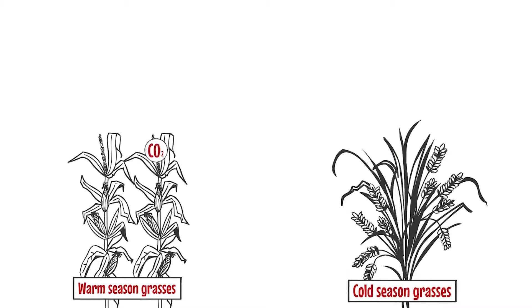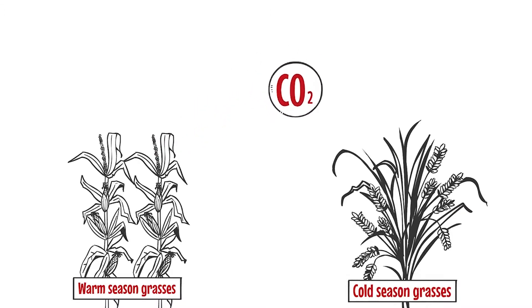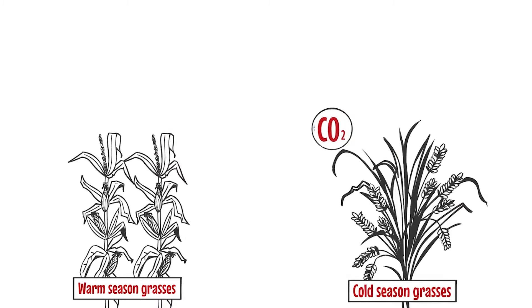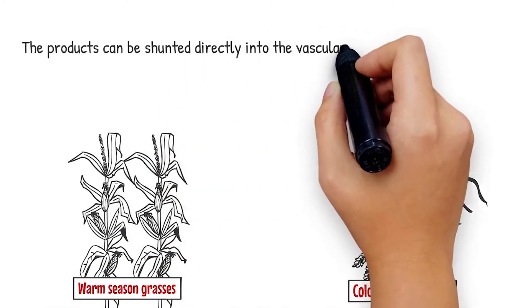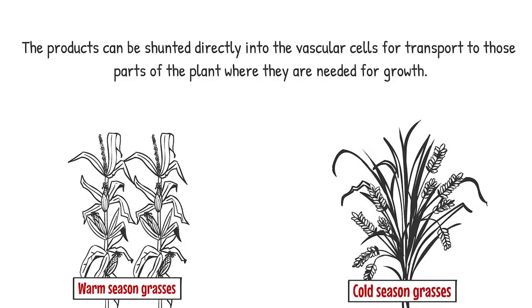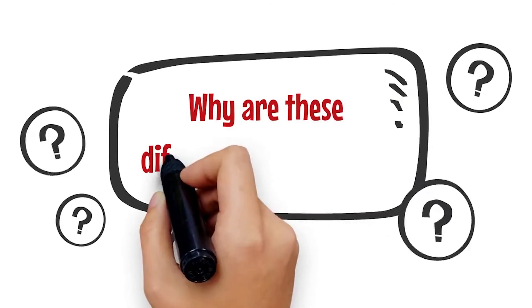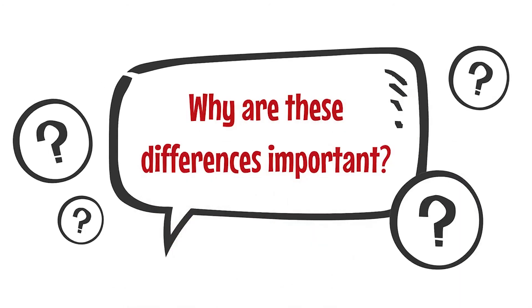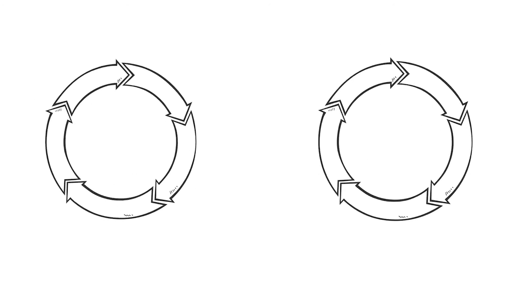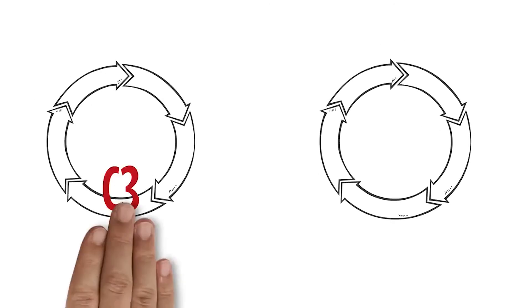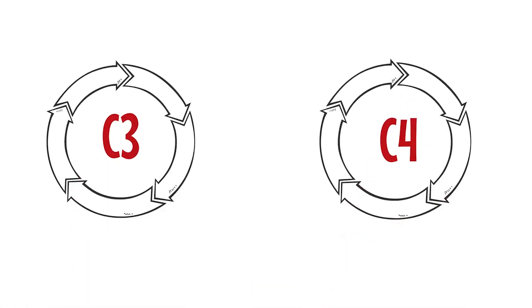In warm season grasses, the C4 compounds are passed quickly through the cells where they release CO2. The CO2 is then utilized just as it is in the cool season grasses, and the products can be shunted directly into the vascular cells for transport to those parts of the plant where they're needed for growth.